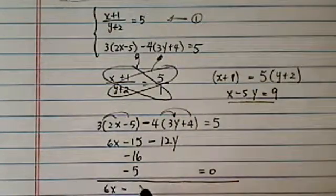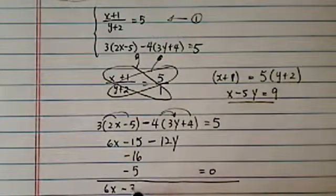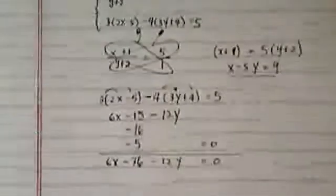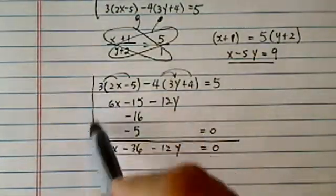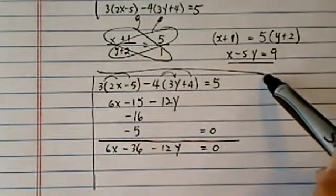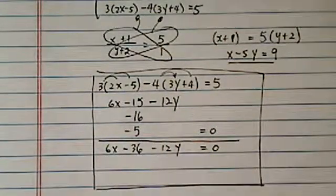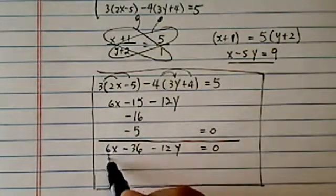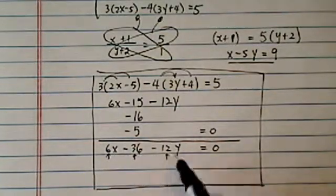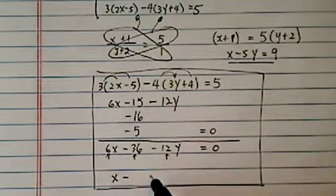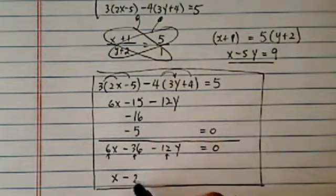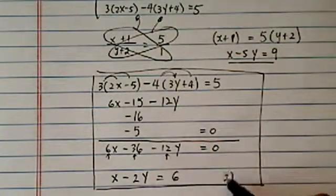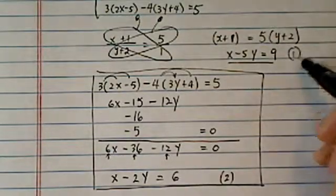I have 6x minus, this is a 36 minus 12y, equal to 0. Now once I get over here, I want to keep my coefficients as small as possibly I can manage. Of course, I spotted there's a 6 in common for all of them. Let's divide the 6 for all of them. I have x minus 2y. I have a minus 6 here, I'm going to put a 6 on this side. So this becomes my equation 2, and this was my equation 1.